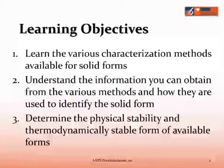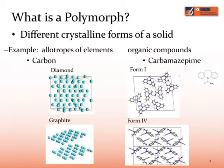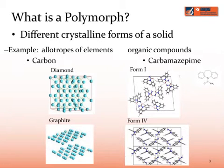So I'd like to start out with some definitions. What is a polymorph? A polymorph is just different crystalline forms of a solid. Common examples are allotropes of an element, such as carbon — you have both diamond and graphite, which are both different solid forms of carbon.